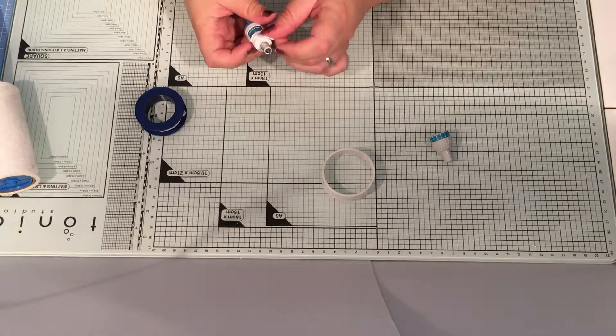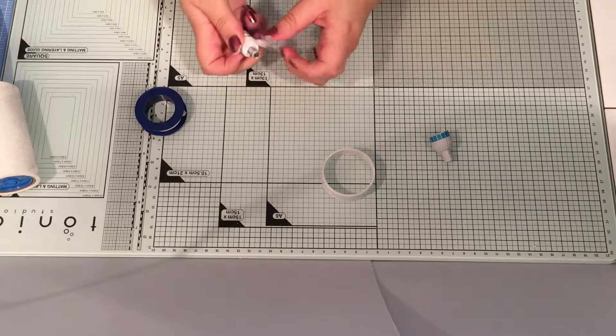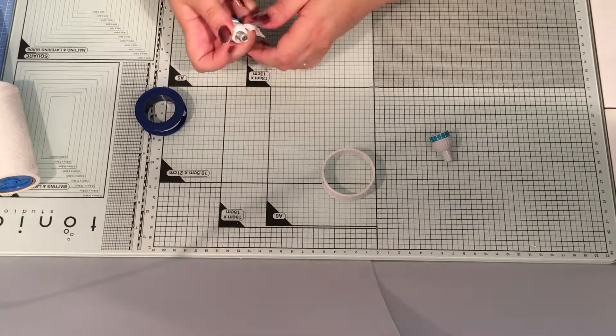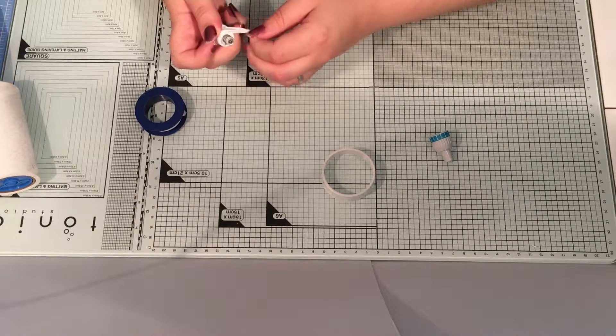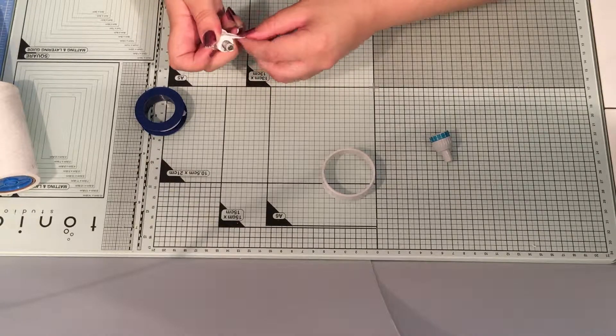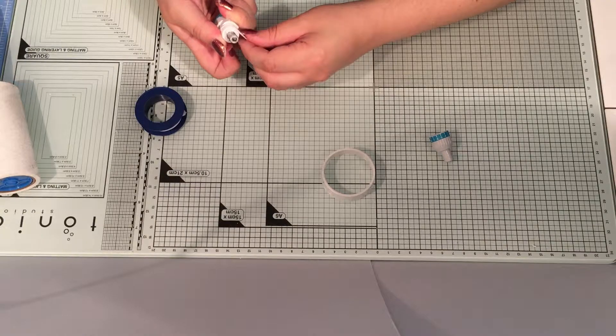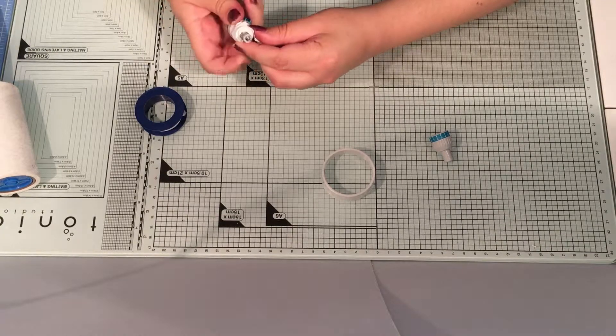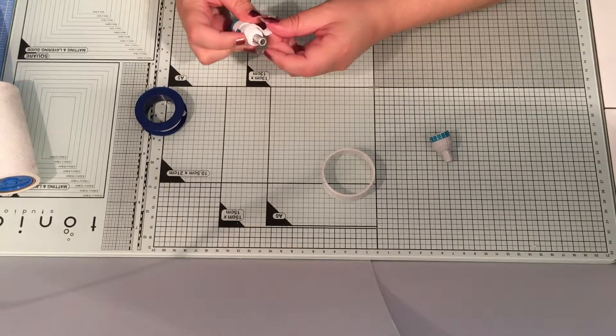So you're going to start off by laying your tape across your screw thread and place it from there and work your way round. Now as you stretch it will start to lie flat and you can start to see how it's going to wrap around your screw thread.